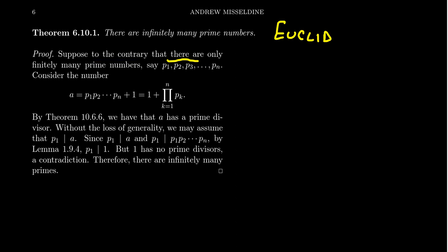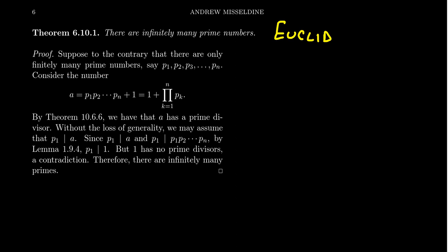You say this so the reader knows what's going on, and so the reader knows you know what's going on as the writer — you're not just coming up with false statements; you know it's false, and you're telling them this false statement will give a contradiction coming forward. The reader knows to look for a contradiction. You could say 'for the sake of contradiction' or 'by way of contradiction' (BWOC). Suppose to the contrary that there are only finitely many primes. Let's list them: there's a first prime, a second prime, a third prime, a fourth prime, up to the nth prime — these are all the finitely many primes.